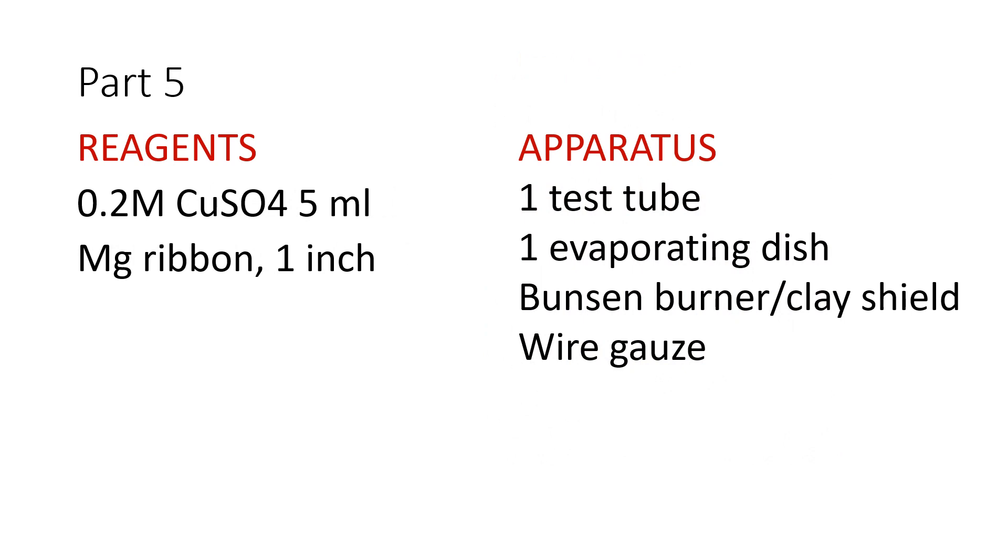In part 5, this is preparation of salt by replacement. You will need 0.2 molar copper sulfate, 5 ml, in a test tube. And the other reactant is a magnesium ribbon about 1 inch in size. To 5 ml of copper sulfate solution, add the magnesium ribbon. Allow to stand, decant into an evaporating dish, and evaporate to dryness.